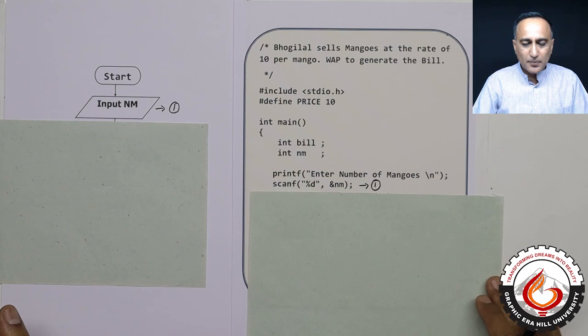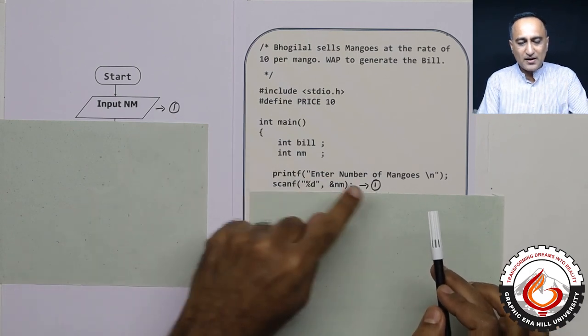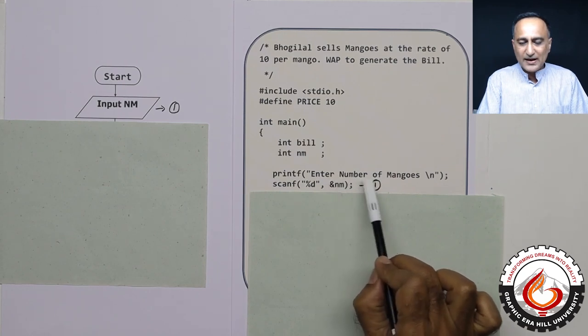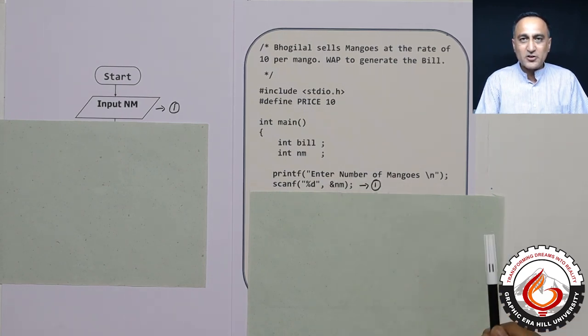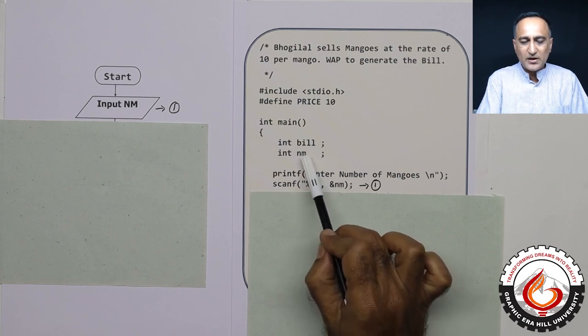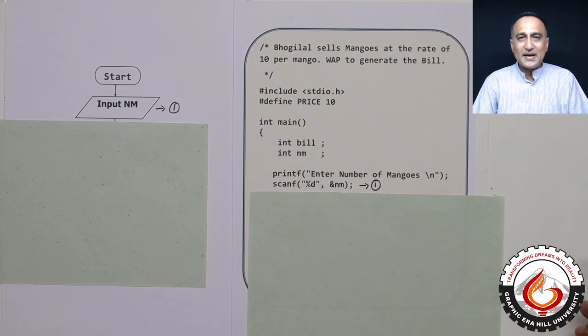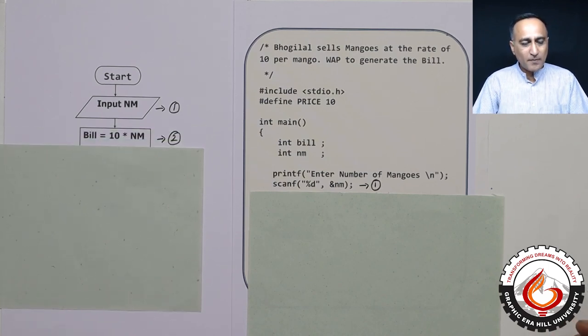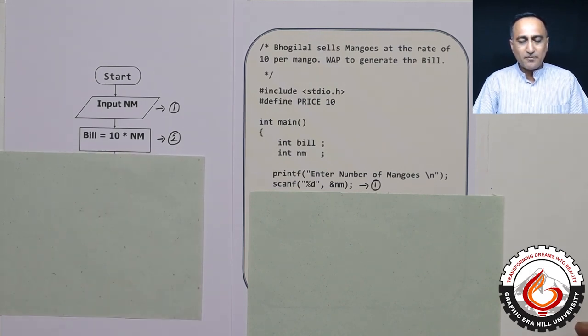Same I am going to do in my program. In step number one here and step number one, you can see the similarity. I am asking the user enter the number of mangoes he or she would like to purchase. So I am reading the number of mangoes into an integer variable called as nm because mangoes cannot be fractional. You cannot buy half a mango or a quarter mango, you have to buy a full mango.